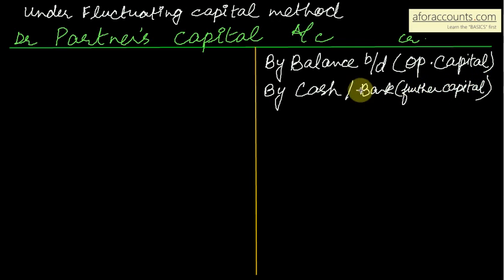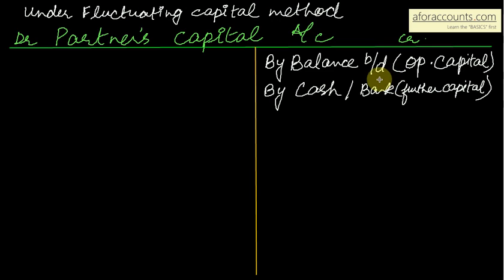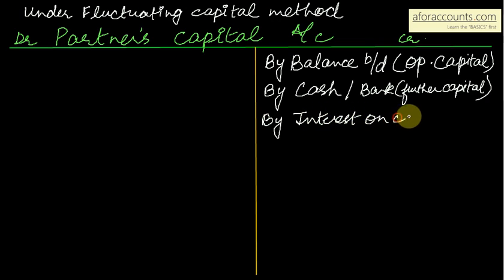The entry is: cash/bank account debit to partner's capital account. Next, the partner may receive interest on capital. Since the partner is investing in the business instead of depositing money in a bank, if the partnership deed provides for it, the partner is entitled to interest on capital. This is income for the partner, so it is added to the balance — on the credit side, we write 'by interest on capital.'